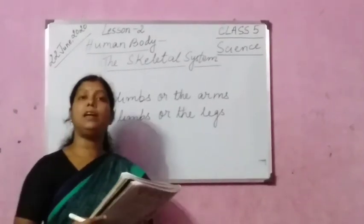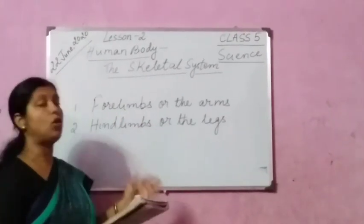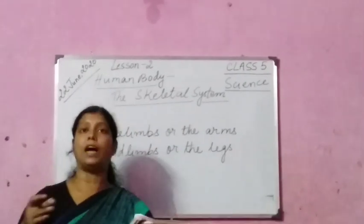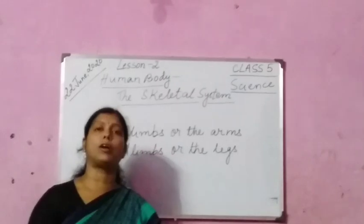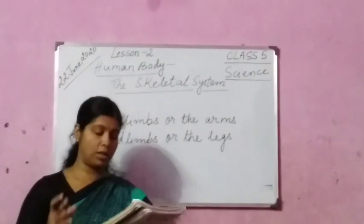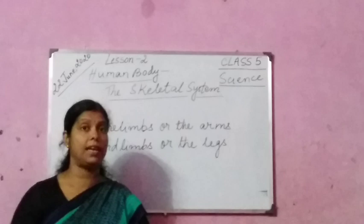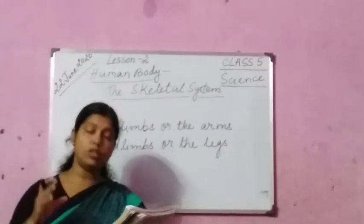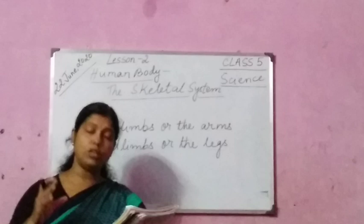Now let us come to hind limbs or the legs. We just talked about our forelimbs or the arms; now we are going to talk about the hind limbs or the legs. We are standing on our legs. Hind limbs or the legs are also divided into two parts: the upper leg and the lower leg, joined with the help of the knee.